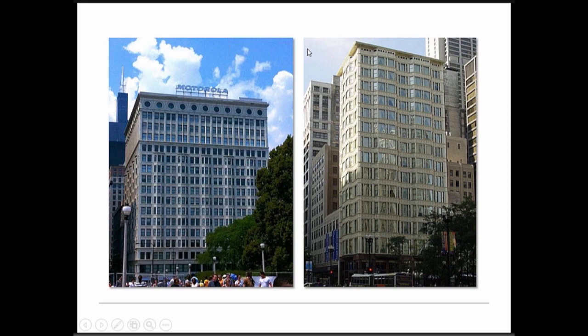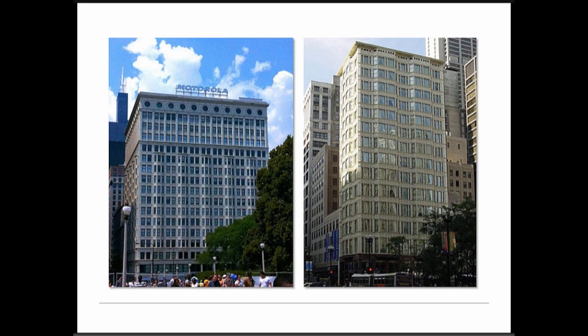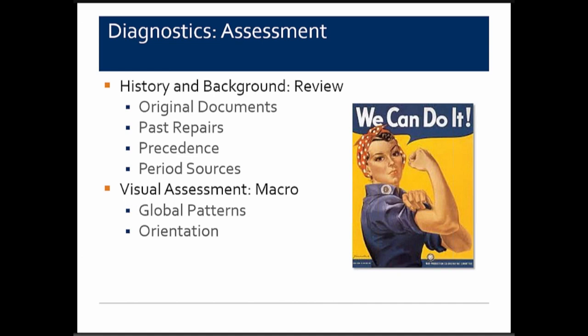Terracotta was used to mimic stone and its ornamental qualities, and the color could be made to closely resemble stone. Manufacturers extolled the notion of the material being self-cleaning — the highly vitrified finishes didn't allow dirt to accumulate on the surface. By the late 1920s and the rise of Art Deco, it was being used as an architectural expression in itself, with polychrome glazes providing great decorative possibilities.